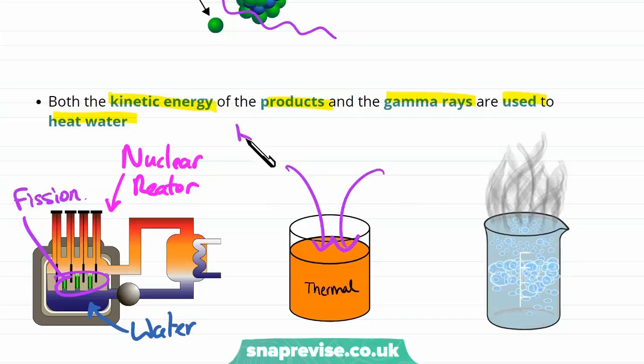So remember there was two types of energy. There was that kinetic energy of the products and the energy being carried by the gamma rays. But all of that energy we try and put into the thermal energy store of the water.